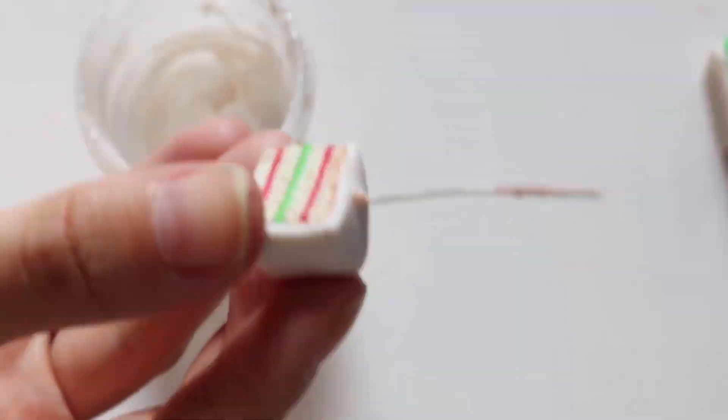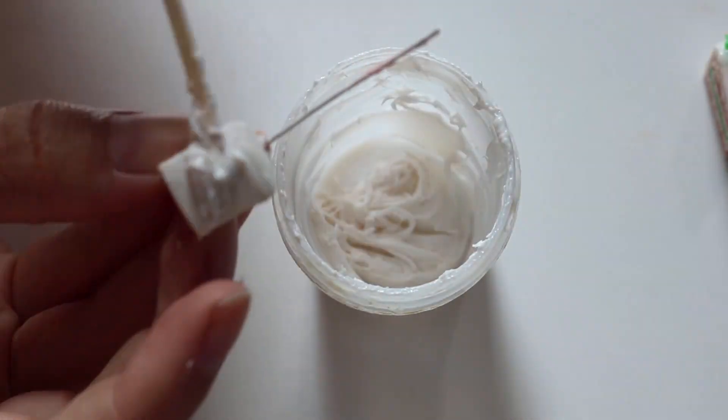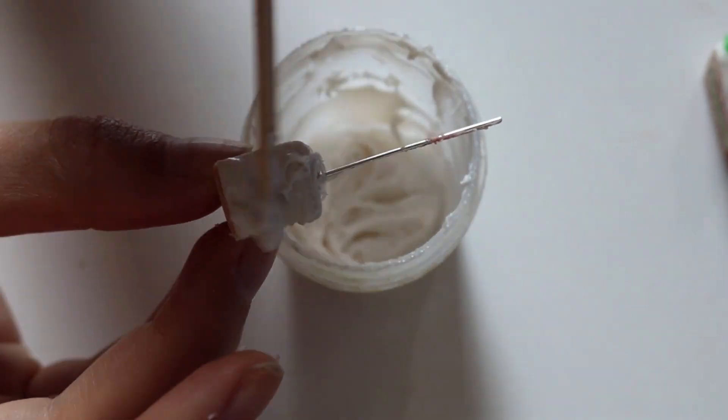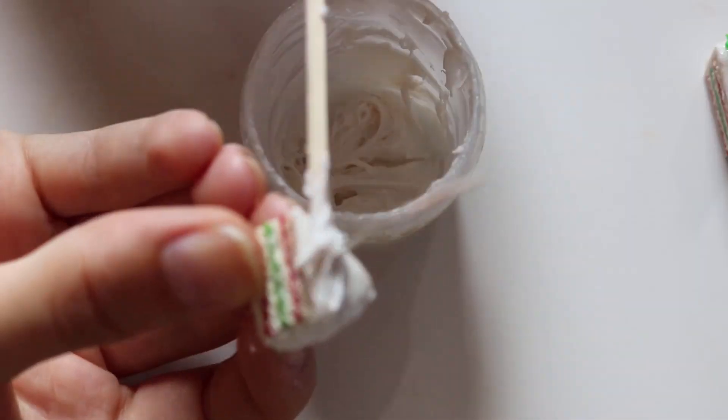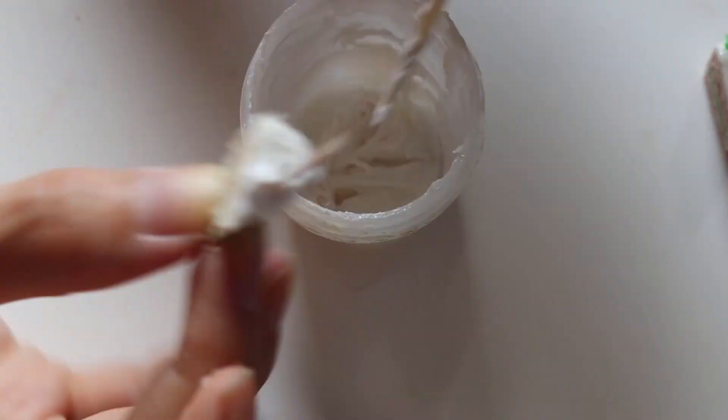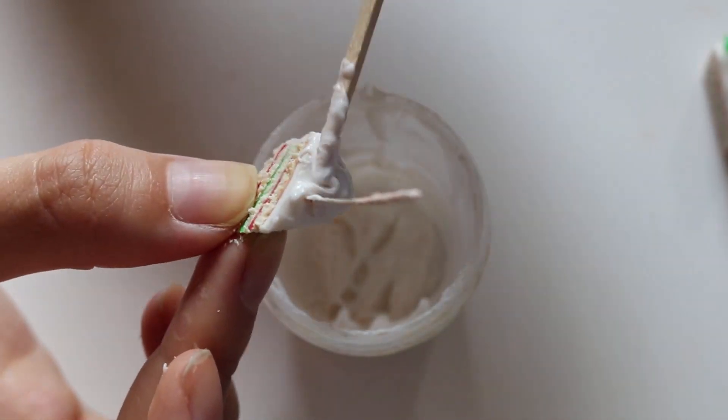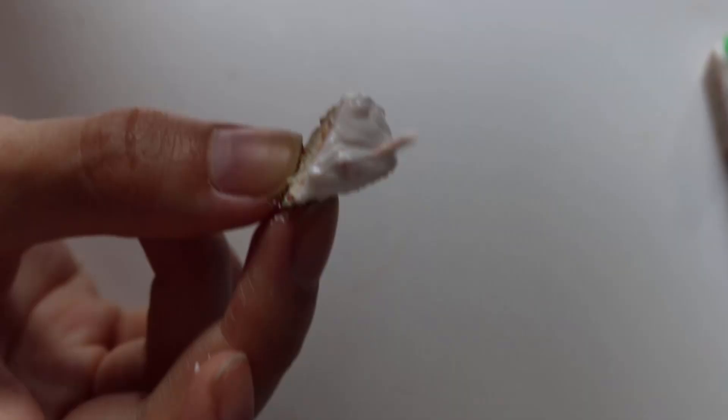So from here we'll be adding on the icing, and I'll leave a link in the description box and right here as to where you can see my icing video. So you're just going to keep adding it on onto the white areas that we've added and swirl it about.